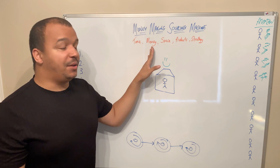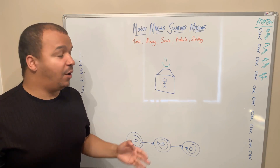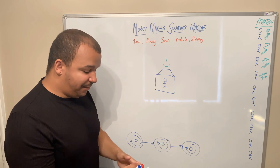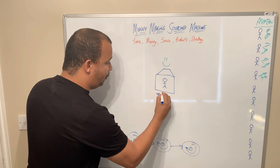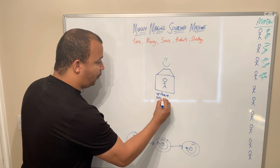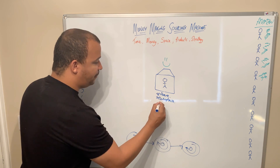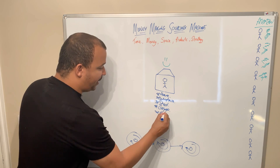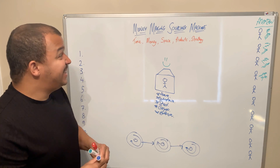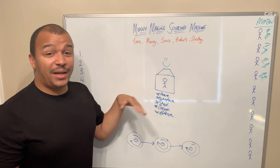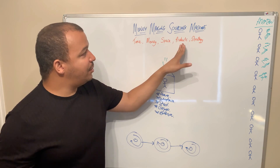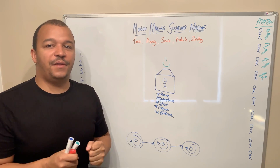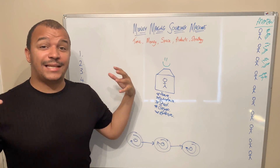Money — capital — is a major bottleneck. The more money you have, the more options you've got. The less money, the fewer options. Space is also a problem. You could be in your home, warehouse, shed, garage, or bedroom right now — space is a bottleneck. Then there's products. If you can't find products, that is most likely the most difficult element of this business — finding profitable products at scale.